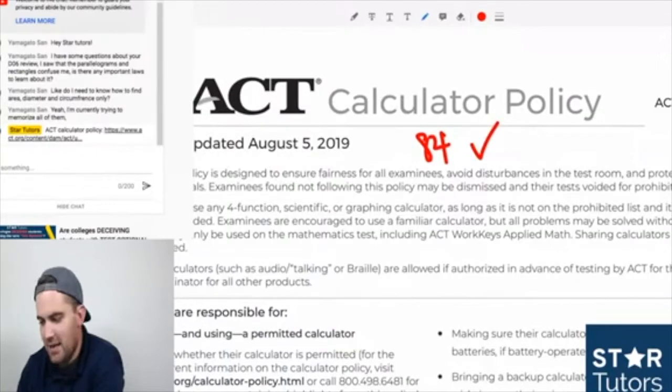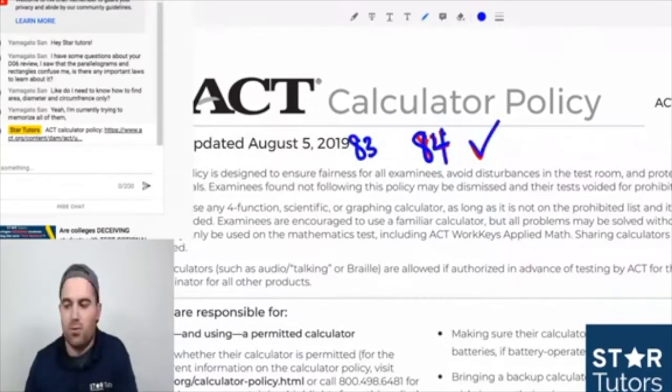The TI-83 is the older version of the TI-84, but the 83 and 84 are the two most popular graphing calculators. If you have a scientific calculator, you're good to go.